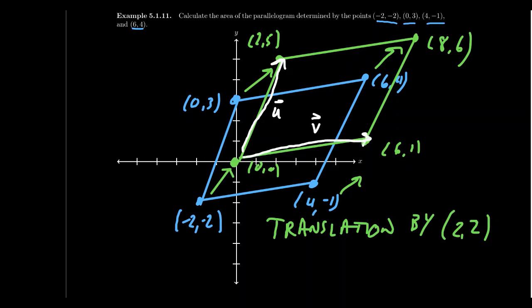So to find the area of this thing, we have to calculate the determinant of the first column of the vector u. Since it goes from 0, 0 to 2, 5, the column will just be 2, 5. Right? And then the second one, v, since it goes from 0, 0 to 6, 1, the second column will look like 6, 1, like so. And so if we calculate the determinant,